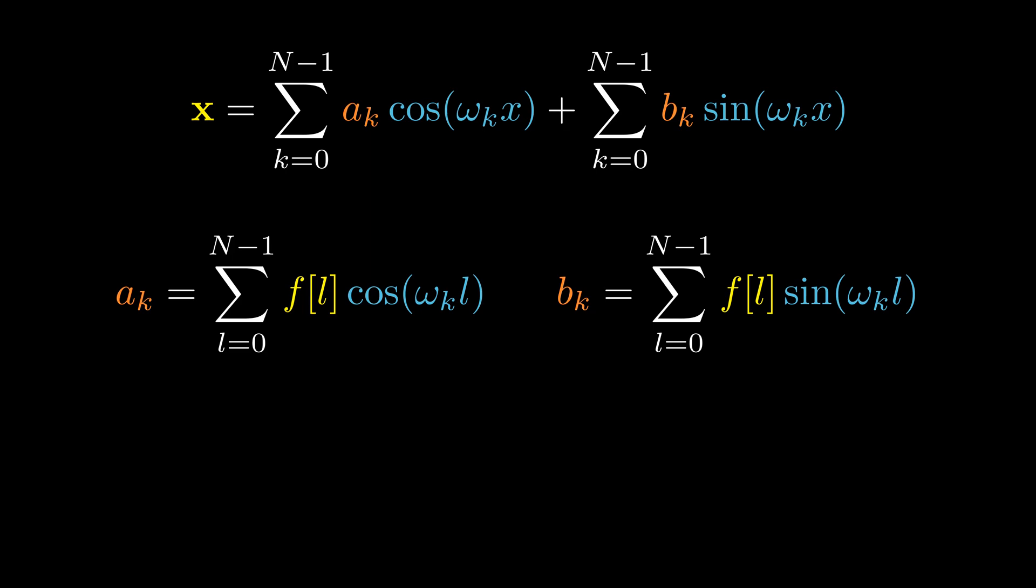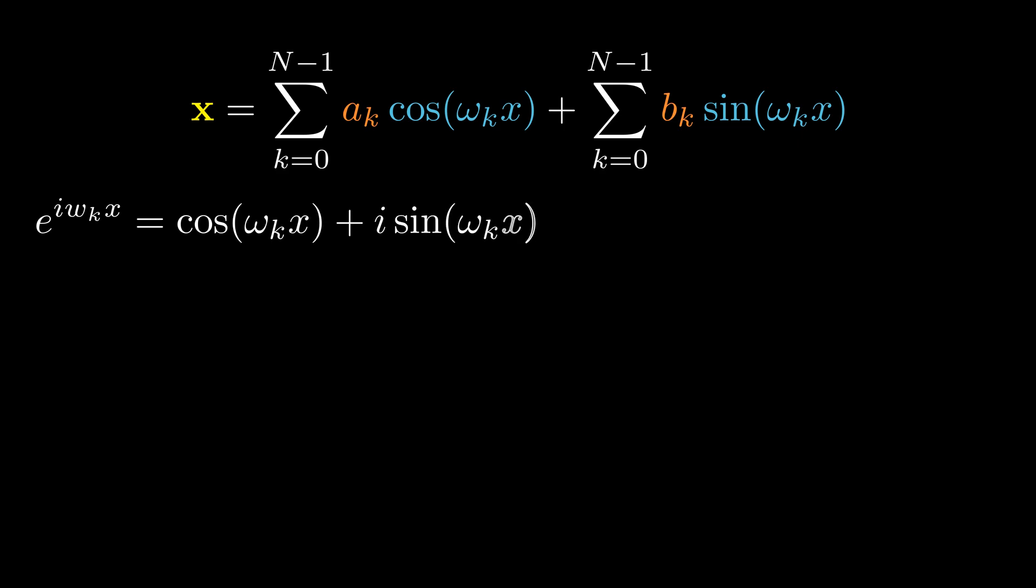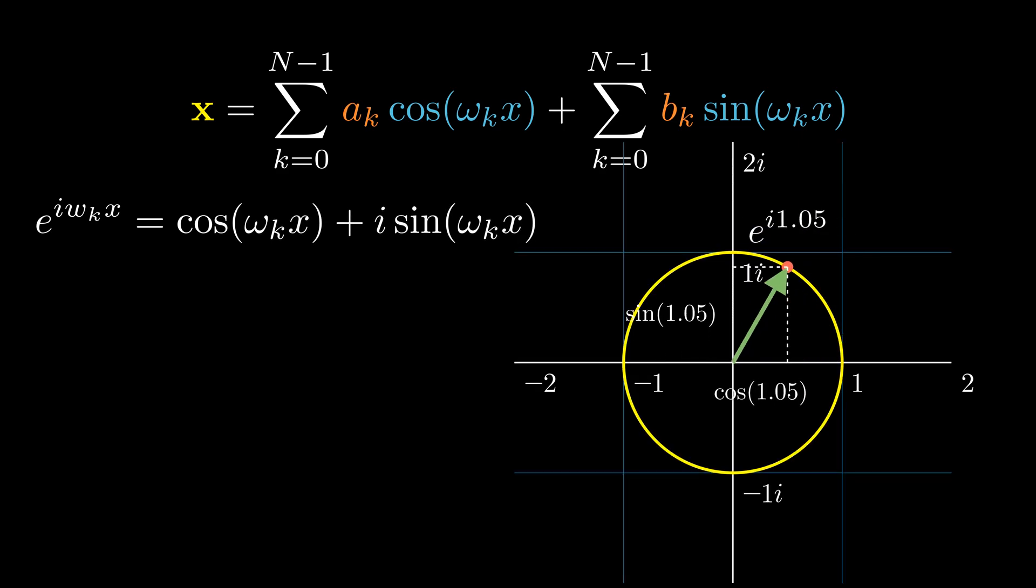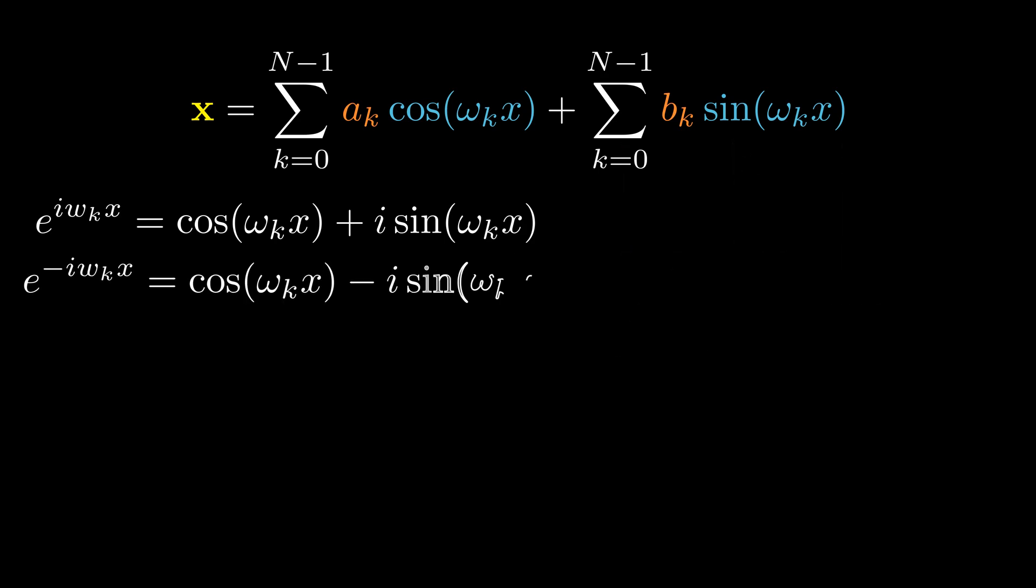It tells us that we can express a signal x as a weighted sum of cosine and sine waves of varying frequencies. But it's not very convenient to keep track of two bases and two sets of coefficients. Let's see how we can simplify this with Euler formula. It says that when we raise e to an imaginary power, we describe a point on a unit circle in a complex plane. This gives a way to bundle the cosine and sine functions together into a single elegant expression.